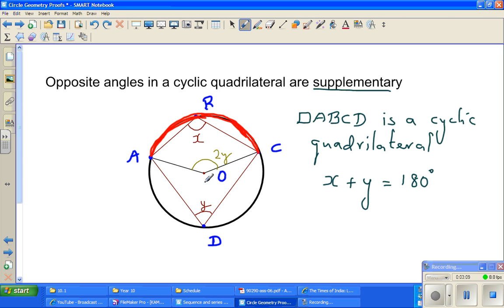Now you are looking at arc ADC, this green arc. Arc ADC is subtending angle ABC on the remaining part of the circle and the reflex angle AOC at the center.